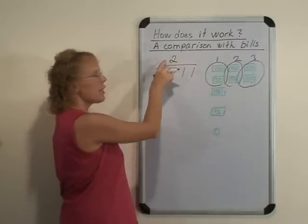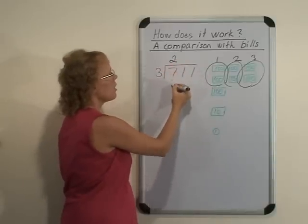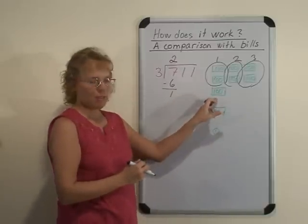We multiply two times three and subtract, and our remainder is 100. This is the remainder now.